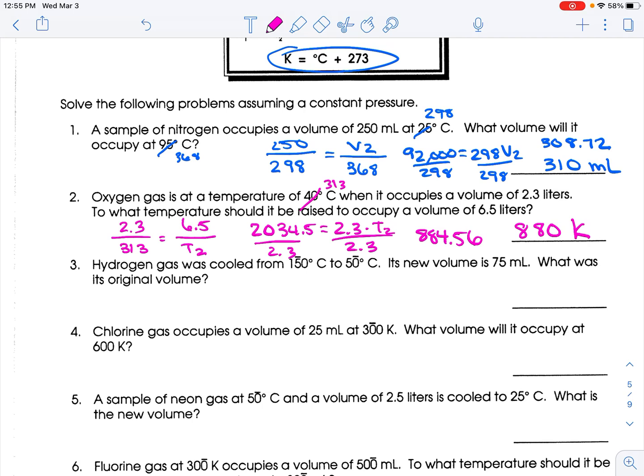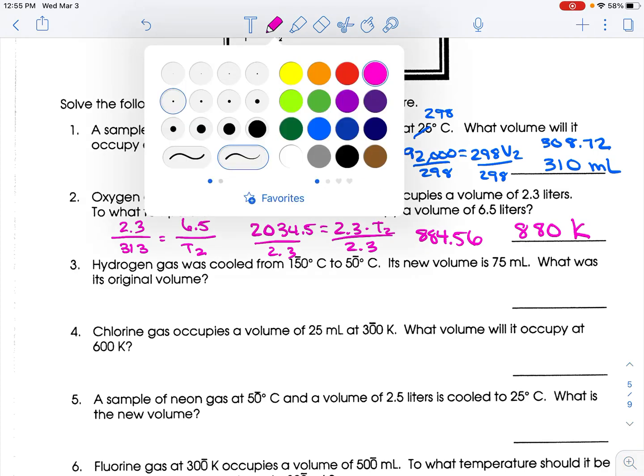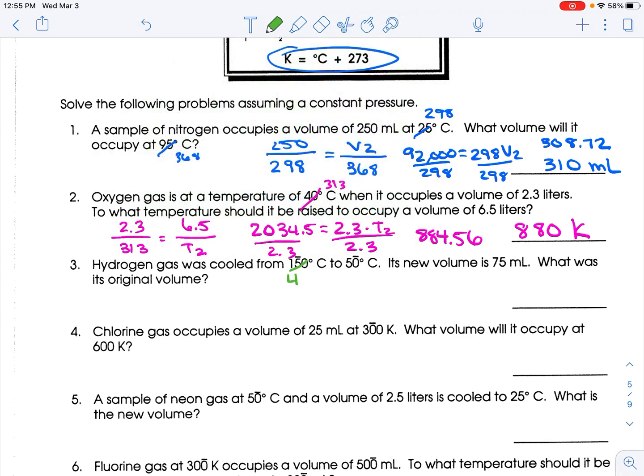150 plus 273 is 423. 50 plus 273. I shouldn't have needed my calculator, but I did it. The original volume. So V1 over 423 equals 75 over 323. So 323 times V1 equals 423 times 75, which is 31725. Divide both sides by 323.